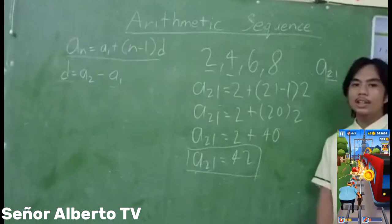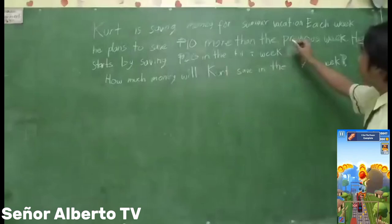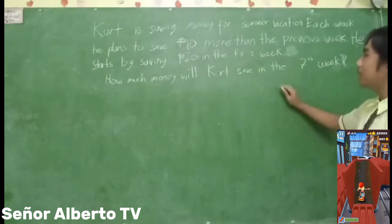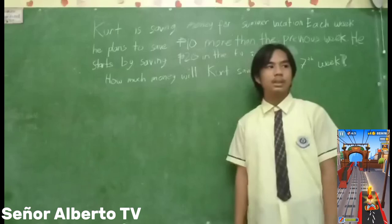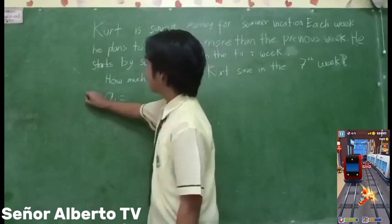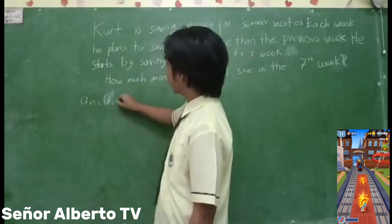That is all for our arithmetic sequence. So how can we apply arithmetic sequence in real life situations? Kurt is saving money for summer vacation. Each week, he tries to save 10 pesos more than the previous week. He starts by saving 20 pesos in the first week. So how much money will Kurt save in the seventh week? Our formula for arithmetic sequence is A sub n is equal to A sub 1 plus n minus 1 times d.